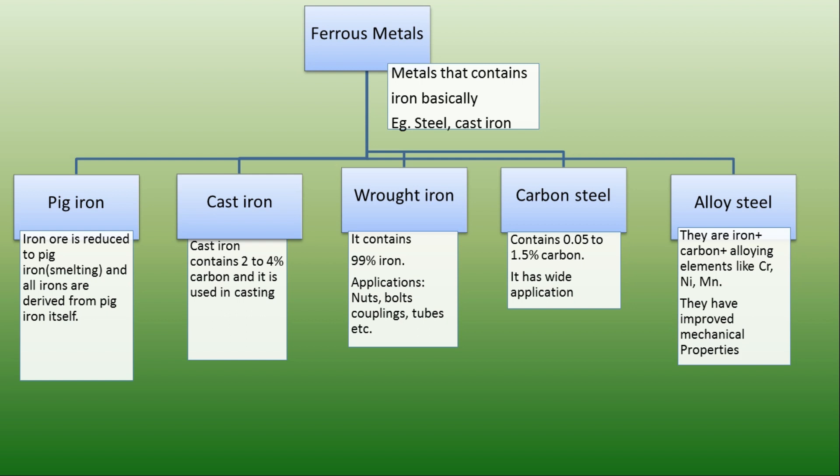Cast iron — as the name implies, it is used for casting a variety of shapes. It contains a higher percentage of carbon, around 2 to 4%. They are further classified as grey cast iron, which contains carbon in the form of graphite flakes. Grey cast iron is more brittle, but it is useful in making intricate shaped parts.